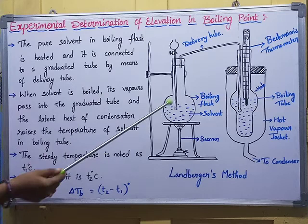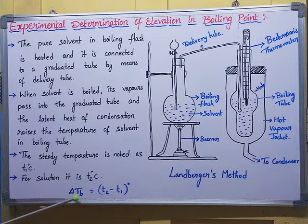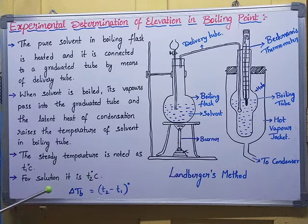By taking the difference between T2 and T1 degrees centigrade, we calculate the elevation in boiling point. The solution temperature is always more when compared to the solvent temperature, so T2 minus T1 degrees centigrade gives us the elevation in boiling point. Through this experimental method, we can determine the elevation in boiling point. Thank you so much for watching.